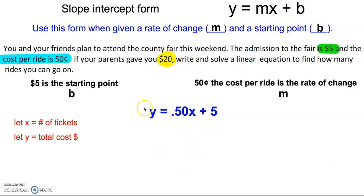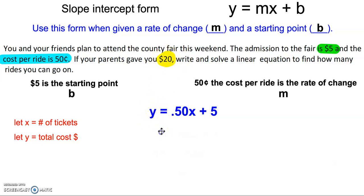So to be able to solve for how many rides you can go on if your parents gave you $20, you need to replace the value for y. So 20 is the cost, so we're going to put 20 in for y. And then we're going to solve this equation.